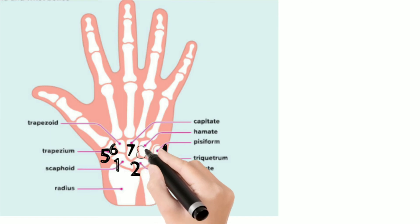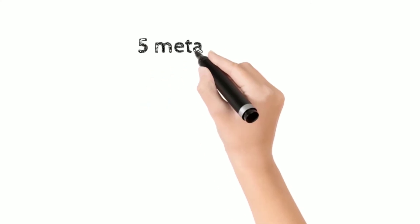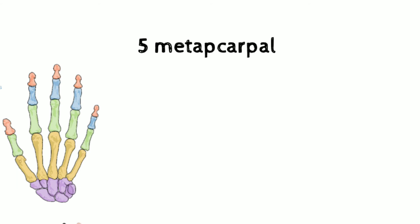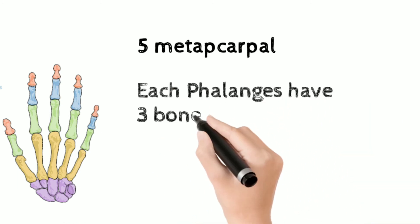So these are the total eight carpal bones. There are about five metacarpals of the hand. And to talk about the phalanges, four fingers of the hand contain three rows of bones except the thumb.